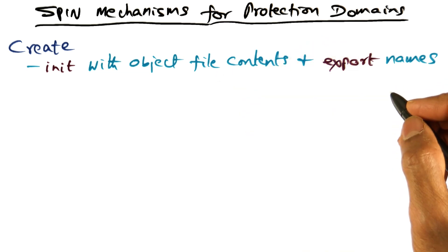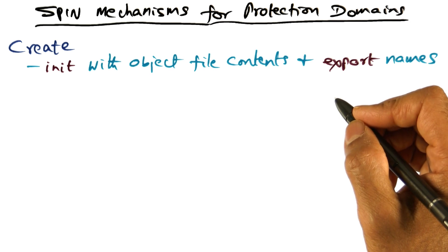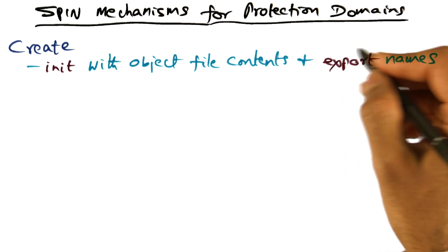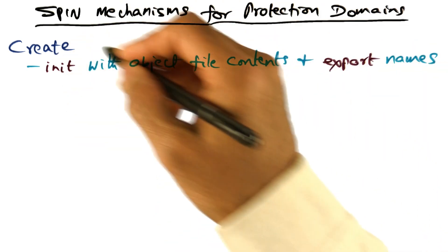For example, if I'm creating a memory management service, I can write the entry point functions in my memory management service and export the names using this create mechanism that's available in SPIN.